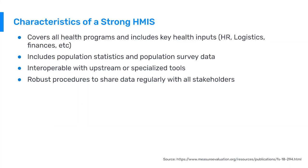A strong HMIS covers all health programs, including key health inputs. Typically when we think about health data, we think about clinical service delivery data coming from health facilities or district health offices. But we also need an expanded perspective: there are other health inputs critically important to delivering adequate clinical services, such as HR data, human resources data, logistics data, and finances data. The HMIS should be the central data repository for all of these key data points — not just clinical service delivery and disease surveillance data, but also those inputs like HR, logistics, and finance. If you don't have one of these critical components, it becomes very difficult to do triangulation activities to identify limitations in your clinical service delivery.